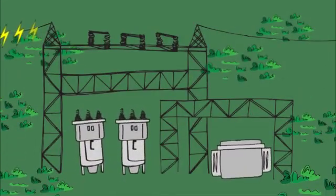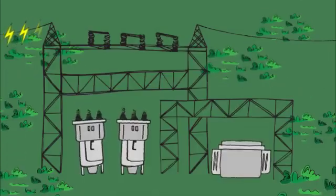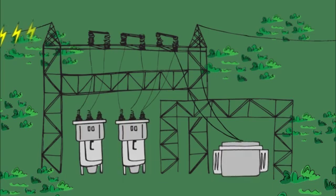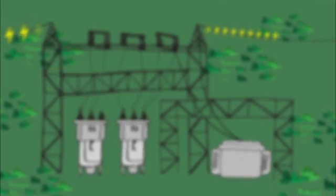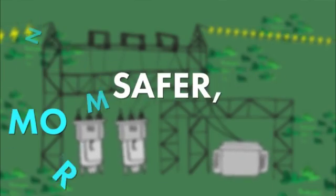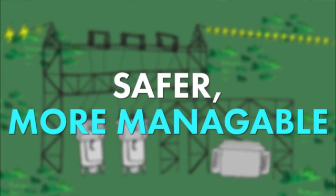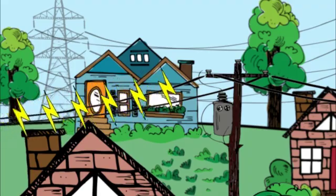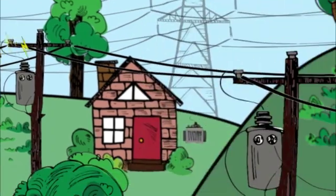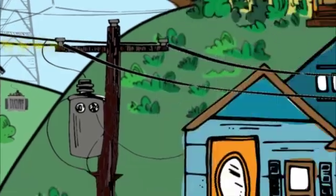Transmission lines connect the power to substations brimming with transformers and control equipment. This is the first place where they transform the voltage to safer, more manageable levels for the distribution system. The voltage then travels through distribution lines, takes one or two more steps down, and arrives at your home.